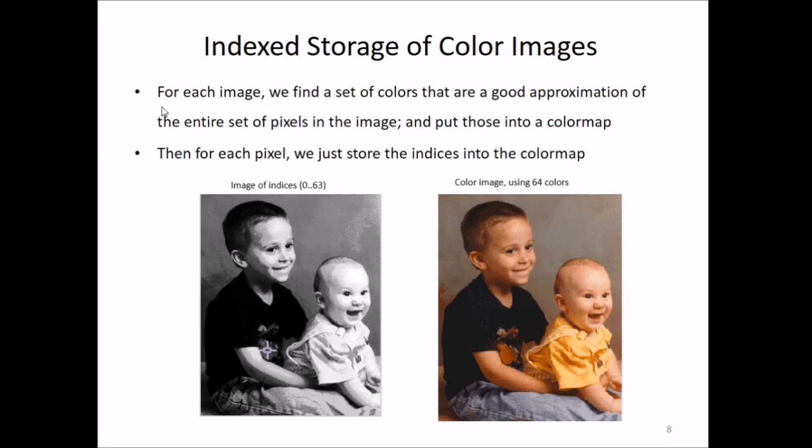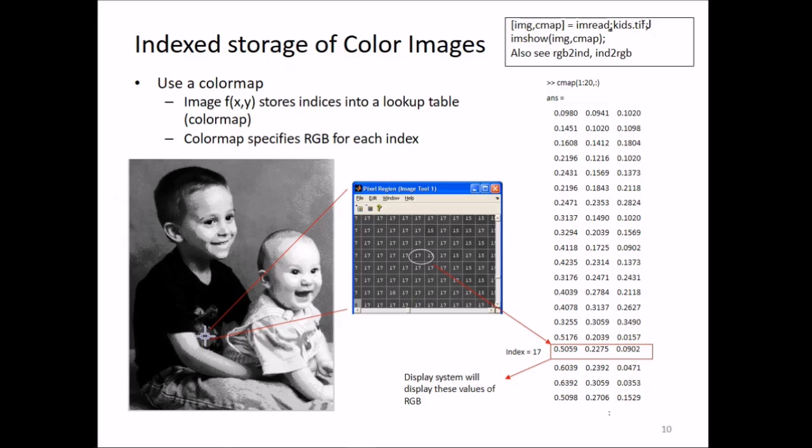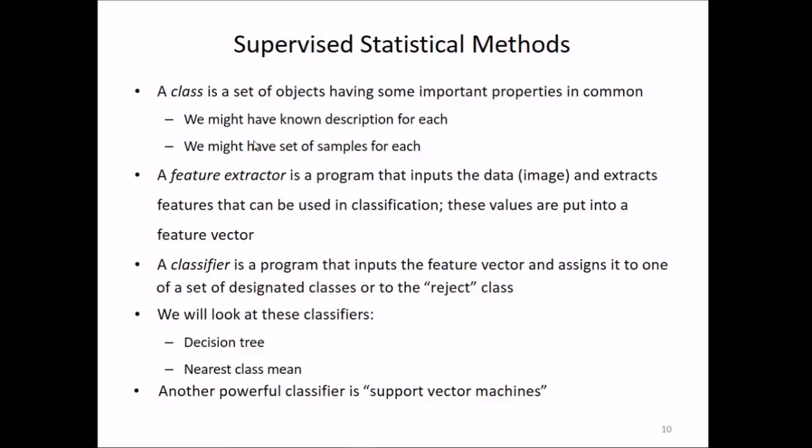For each image we find a set of colors that are a good approximation of the entire set of pixels in the image and put those in a color map. For each pixel we just store the indices into the color map. This is the image of integers 0 to 63, and this is the color image using these 64 colors. This is the MATLAB code for this. The image x(i,j) stores indices into a lookup table. The color map specifies the RGB for each index. We use only a few bits for these color mapping indices.